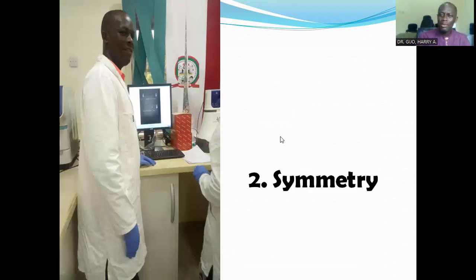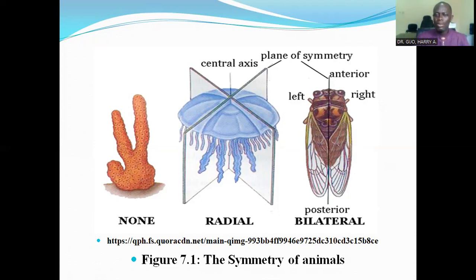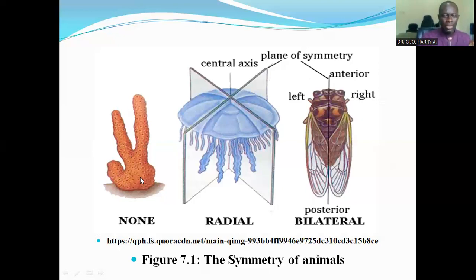I want to look at symmetry, which is also another feature used for the classification of organisms. Organisms can either be asymmetrical — in which they cannot be cut into any two identical halves — or radially symmetrical, in which they are able to form two identical halves, and such organisms belong to a group called radiata. Then we have the bilateria that are bilaterally symmetrical — you can cut them into two identical mirror images. In the case of radiata, they can be cut in any plane to produce identical images. The asymmetrical organisms like sponges cannot be cut into any identical halves.